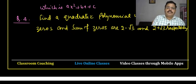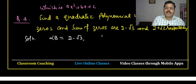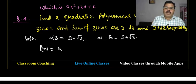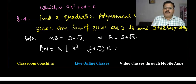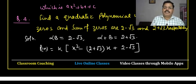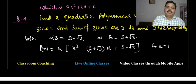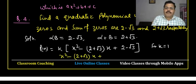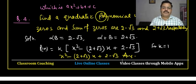Now for question number 4, where the zeros are 2-√3 and 2+√3 respectively: the polynomial p(x) = k times of (x² - (2+√3)x + (2-√3)). For k = 1, the polynomial will be x² - (2+√3)x + (2-√3), and that is the answer.